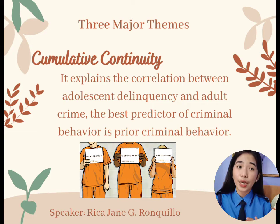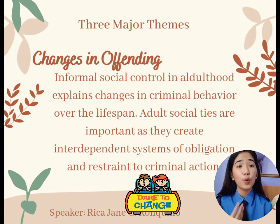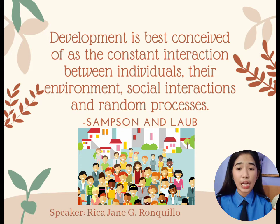And lastly, informal social control in adulthood explains changes in criminal behavior over the lifespan. Although social ties are important as they create interdependent systems of obligation and restraint to criminal action, Samson and Laub suggest that development is best conceived of as a constant interaction between individuals, their environment, social interactions, and random processes.